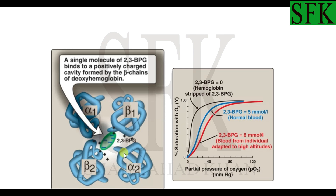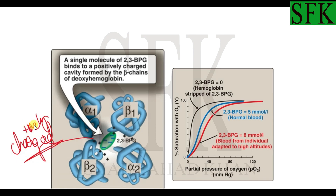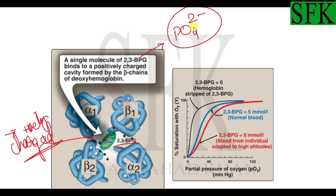Looking at the structure of hemoglobin, we have the four subunits — two alpha and two beta subunits. In between the beta subunits there is a positively charged region due to some positively charged amino acids present there. These positively charged amino acids attract the negatively charged 2,3-BPG towards themselves, forming a pocket-like structure. 2,3-BPG, containing negatively charged phosphate groups, comes and binds to this pocket between the beta chains of hemoglobin.